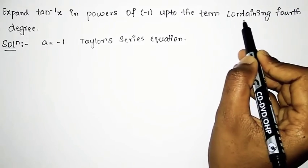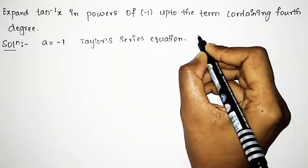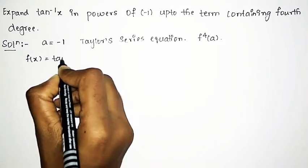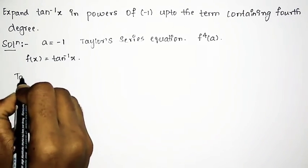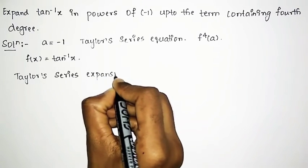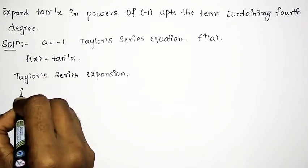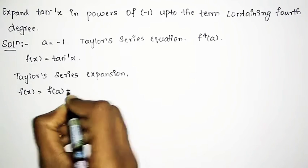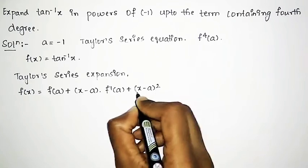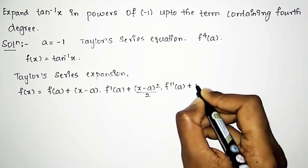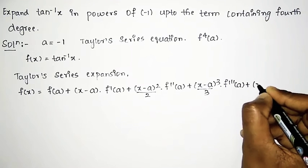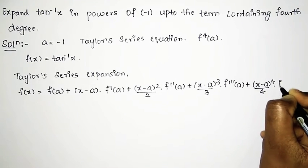We need to find the Taylor series expansion up to the 4th term, that is up to f raised to the power 4 of a. The Taylor series expansion is: f(x) = f(a) + (x − a)·f'(a) + (x − a)²/2·f''(a) + (x − a)³/3!·f'''(a) + (x − a)⁴/4!·f⁴(a).